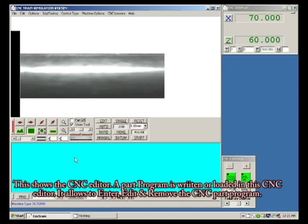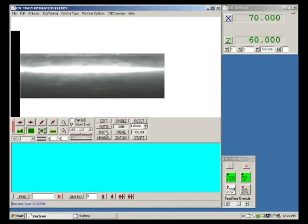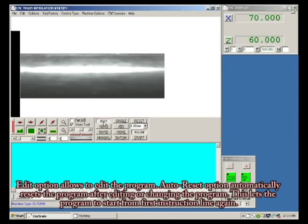This shows the CNC editor. A part program is written or loaded in the CNC editor. It allows to enter, edit, and remove the CNC part program. Various options available in the CNC editor screen include edit, which allows to edit the program, auto restart, and auto reset. This option allows to reset the program after editing or changing the program, letting the program start from the first instruction line again.